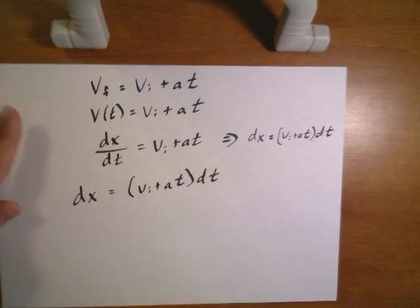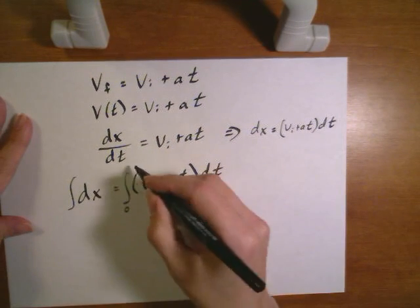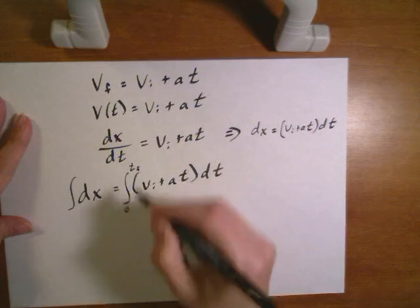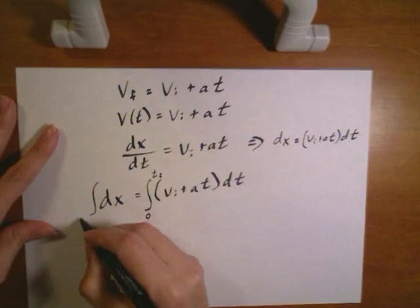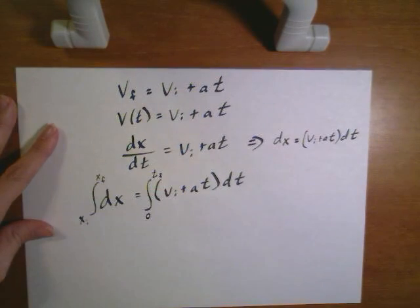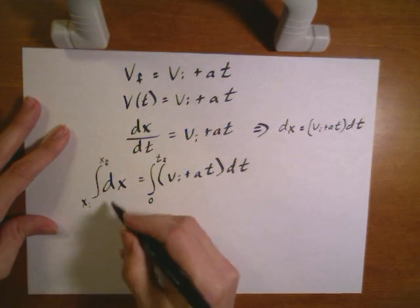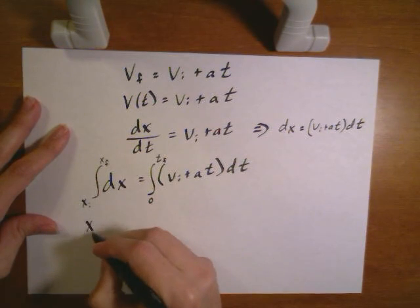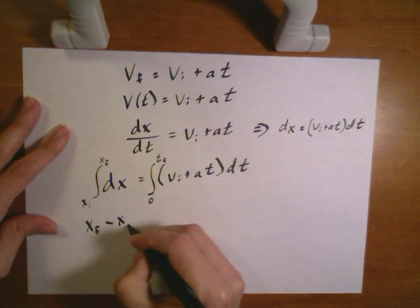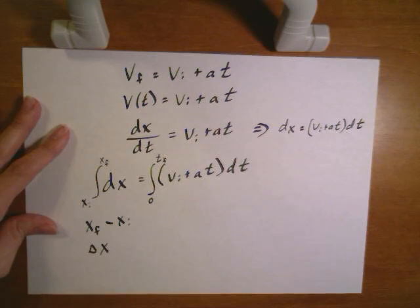I can integrate both sides of this equation. Again for time I'm going between zero and some final time. And over here on position I'm going from some initial position to some final position. Integration here on the left side yields x final minus x initial, also called delta x the displacement.